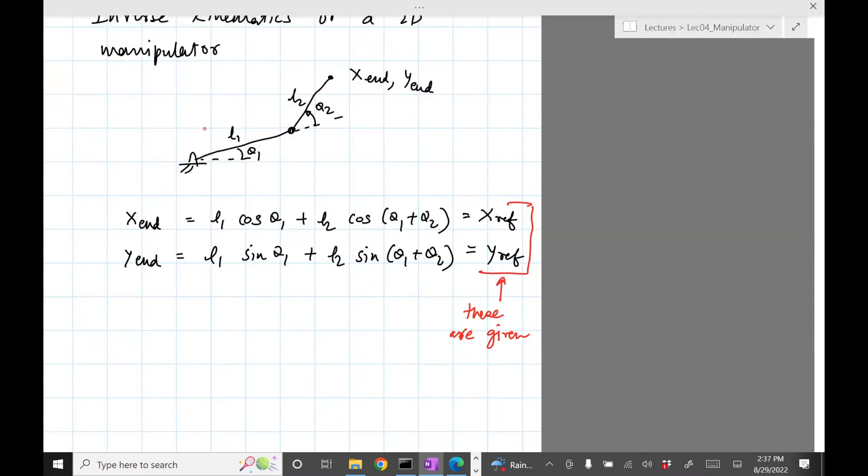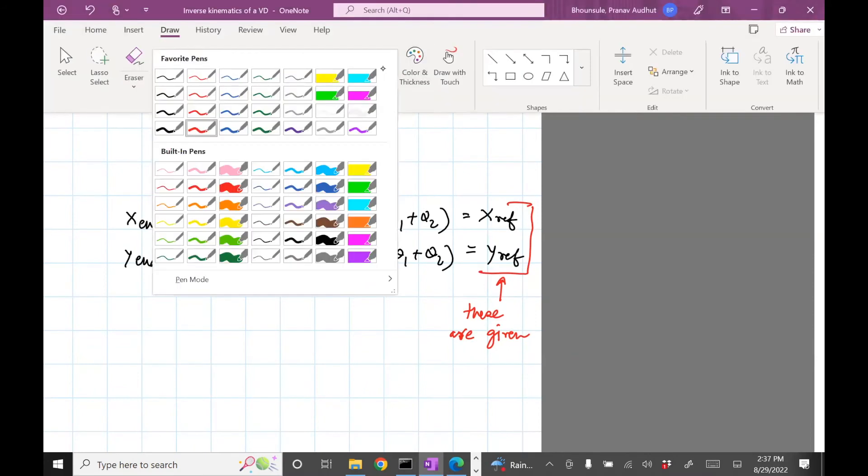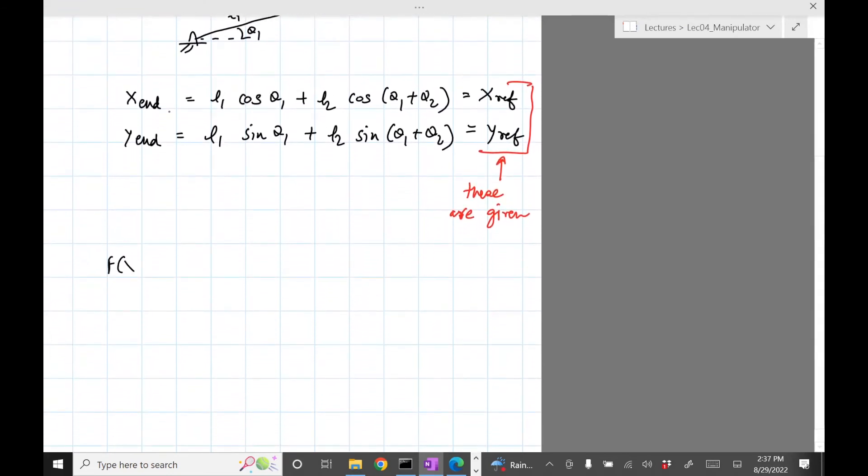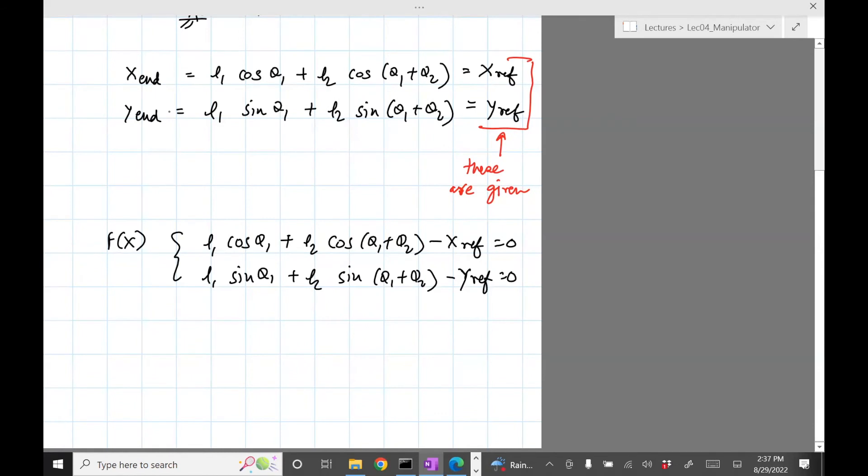So you're given them and you are told to compute θ₁, θ₂. So what you'll do is write this in terms of f(x). We can write a function f which will be two equations: l₁ cos(θ₁) + l₂ cos(θ₁ + θ₂) - x_ref = 0, and then l₁ sin(θ₁) + l₂ sin(θ₁ + θ₂) - y_ref = 0. So compute θ₁ and θ₂.